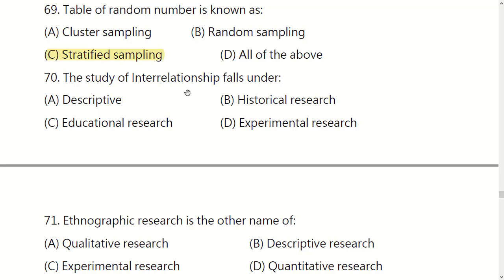The study of interrelationships falls under: descriptive research, historical research, educational research, or experimental research. The right option is D: experimental research.